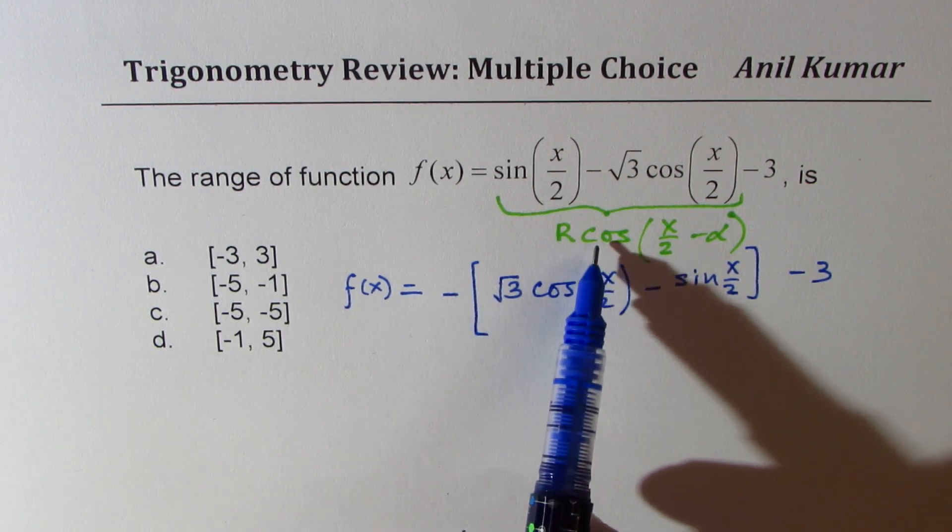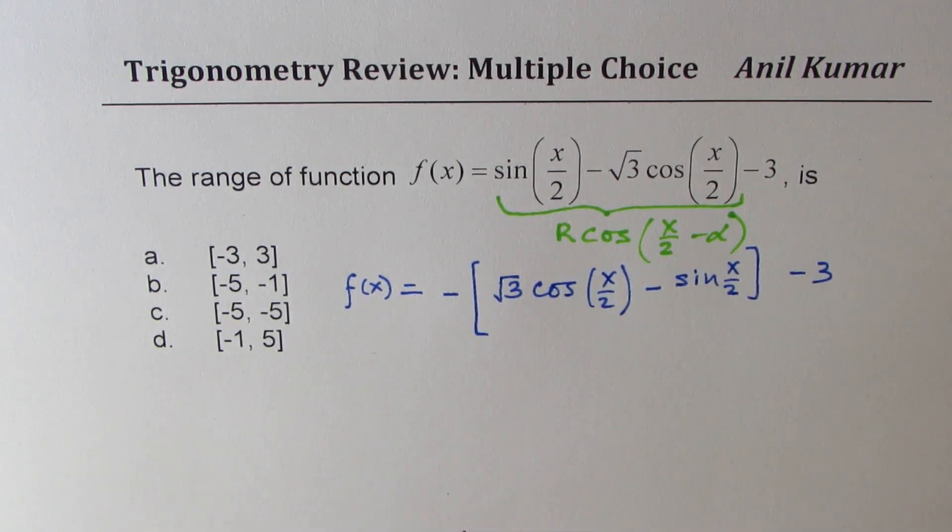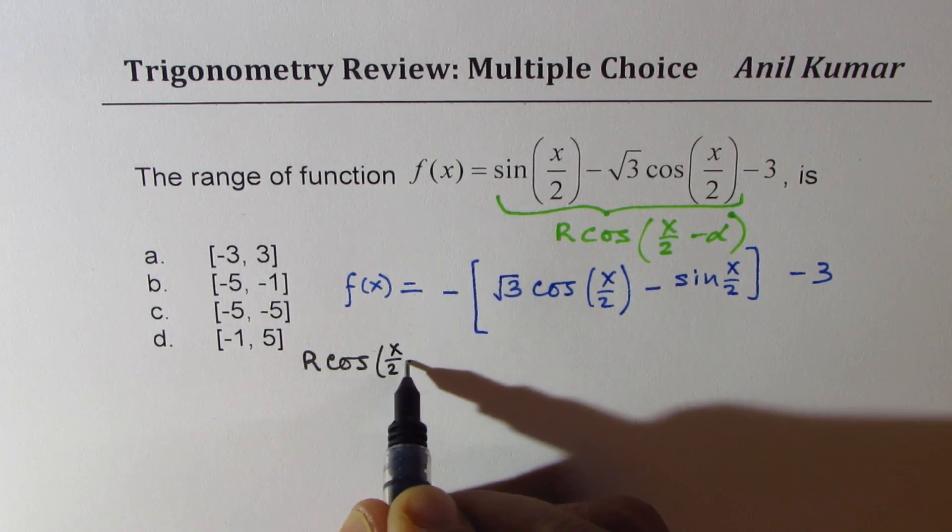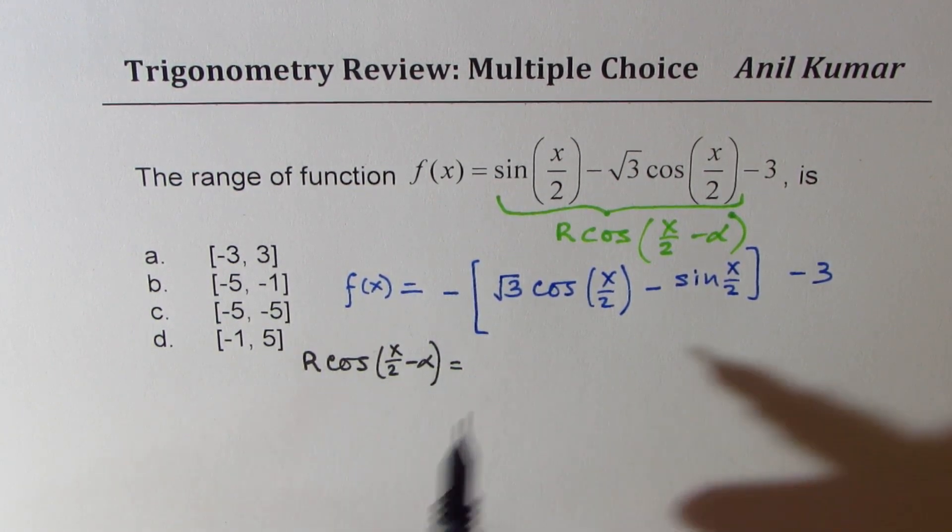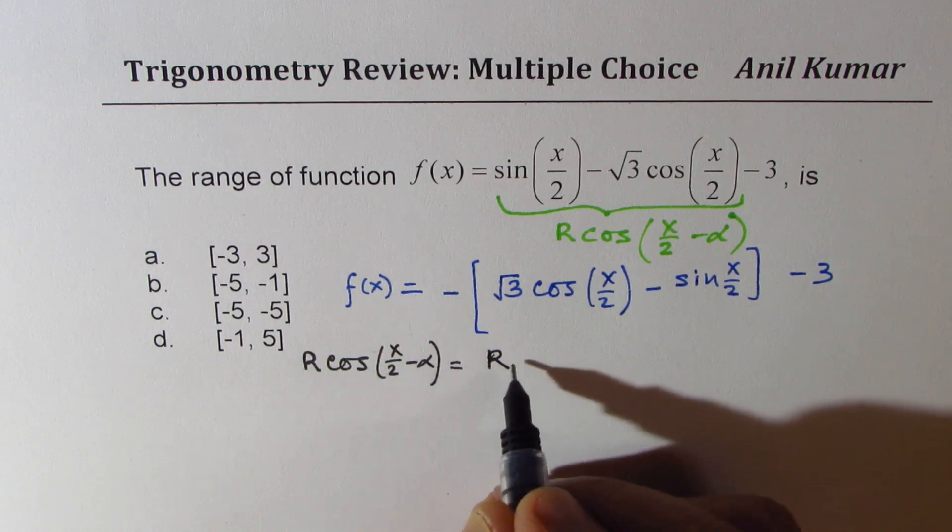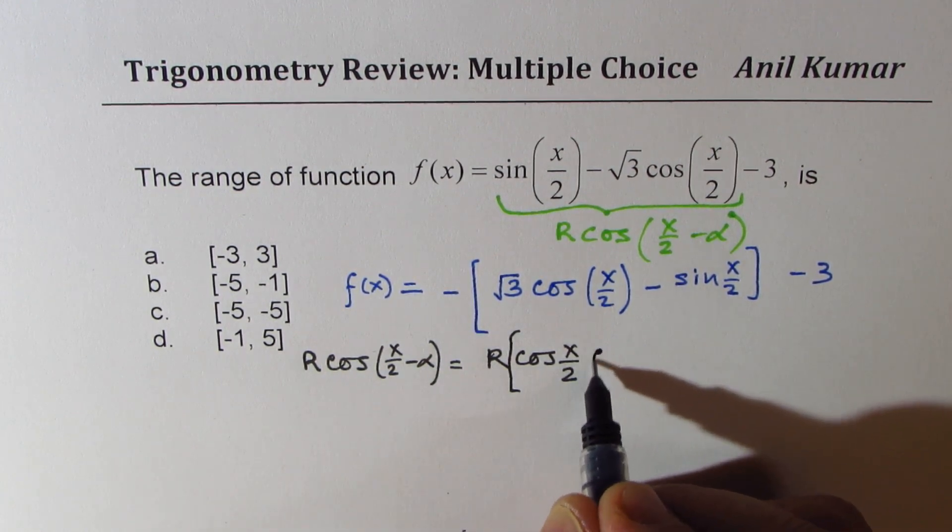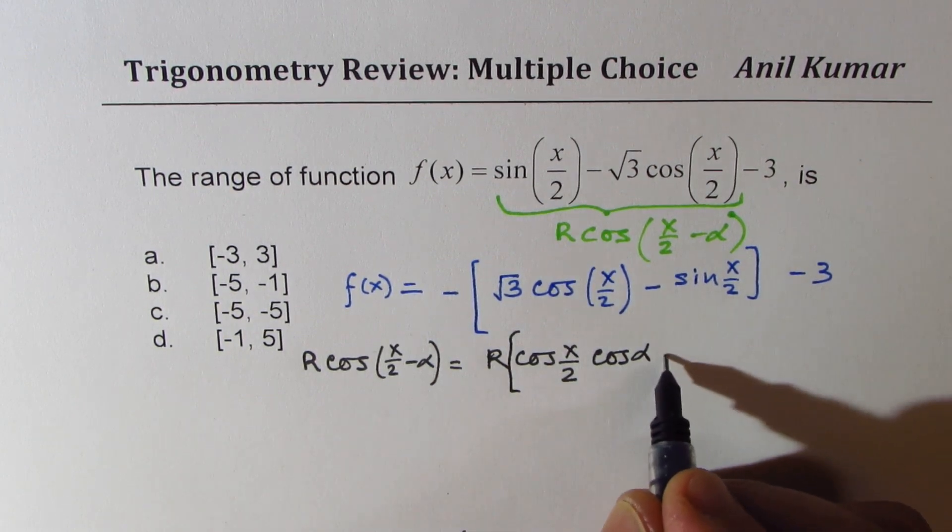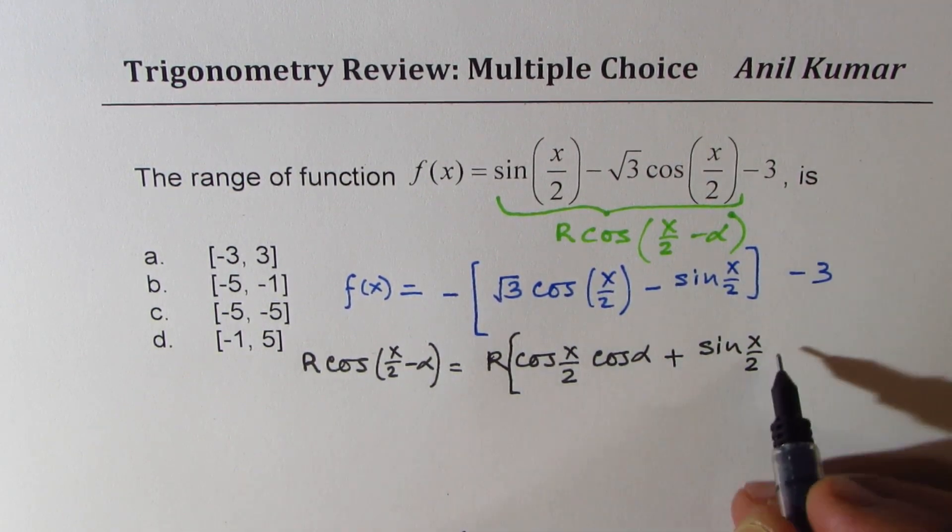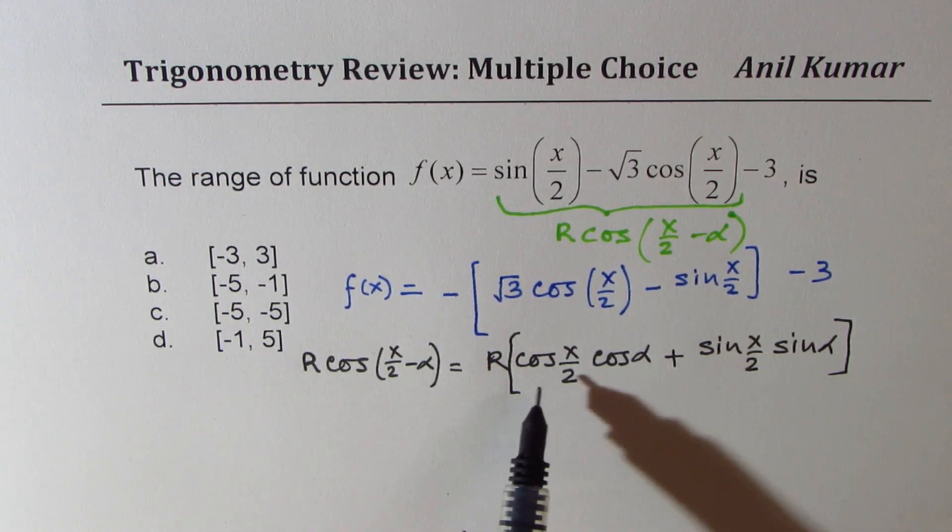Let's compare this with something like R cos x by 2 minus alpha. If I write a function which is R cos x by 2 minus alpha, then we could say this is R times the compound angle formula, which is cos x by 2 cos alpha, and when it is minus it becomes plus sin x by 2 sin alpha.